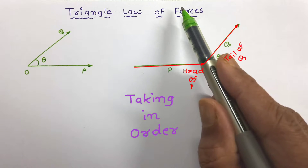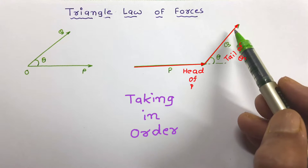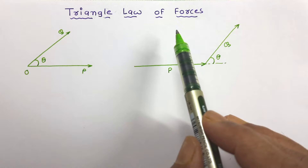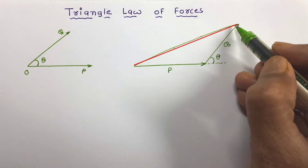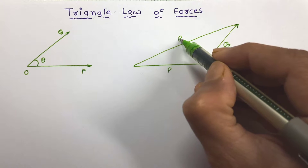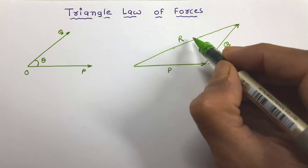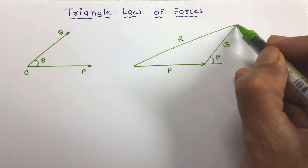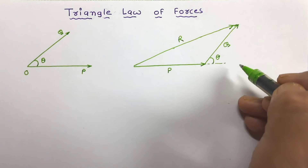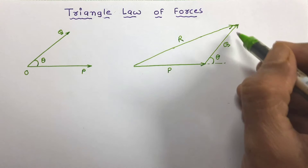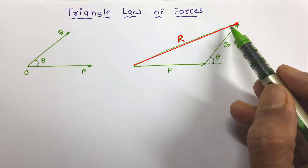We can start from the head of Q force — that is also called taking in order. According to this triangle law of forces, the resultant can be obtained by the third side of the triangle. This will give the magnitude of force R, but it is to be taken in opposite order. Opposite order means here the tail will not be shown; we have to show the head of the resultant. So R is in opposite order while P and Q are in order.